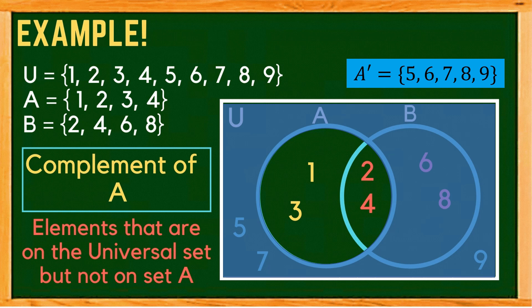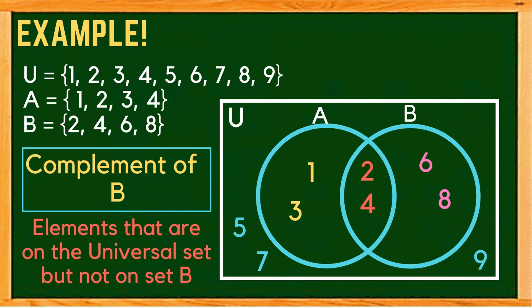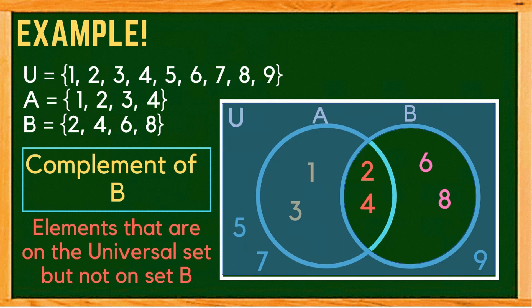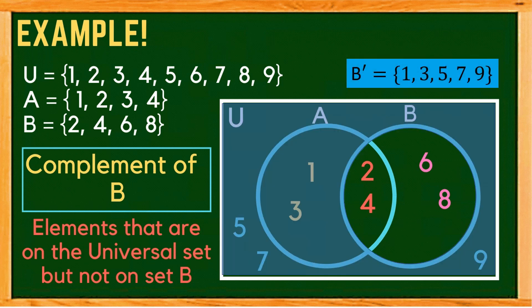What now is the complement of set B? These are the elements in the universal set but not in set B. On our Venn diagram, the shaded region is the complement of B, and its elements are 1, 3, 5, 7, and 9.